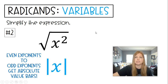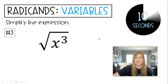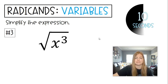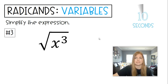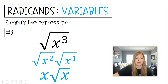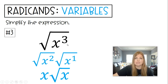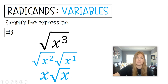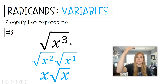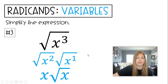You'll see a couple special cases of those. Next one: square root of x to the third — an odd exponent. We can't take half of 3, but we can break one apart. So the square root of x cubed becomes the square root of x squared times the square root of x to the first. Square root of x squared is x, and square root of x to the first is just the square root of x. Any odd exponent, we always break one away from it — 3 minus 1 is 2, and we can take half of 2. There are no absolute value bars here because it started odd. The rule is only when you go from originally even to odd.